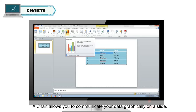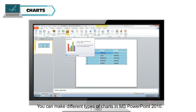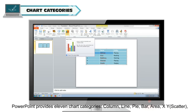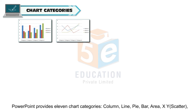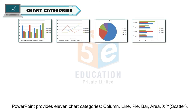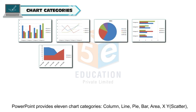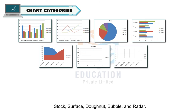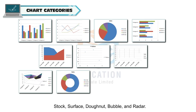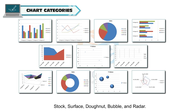A chart allows you to communicate your data graphically on a slide. You can make different types of charts in MS PowerPoint 2010 and also import or copy charts from Word or Excel. PowerPoint provides 11 chart categories: Column, Line, Pie, Bar, Area, X Y or Scatter, Stock, Surface, Donut, Bubble, and Radar.